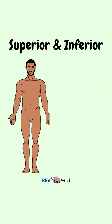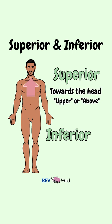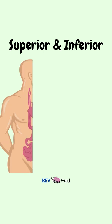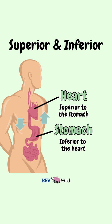First we have the terms superior and inferior. Superior means towards the head, or upper or above. Inferior means towards the feet, or lower or below. So we'll say the heart is located superior to the stomach, or the stomach is located inferior to the heart.